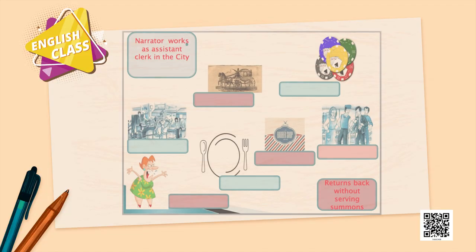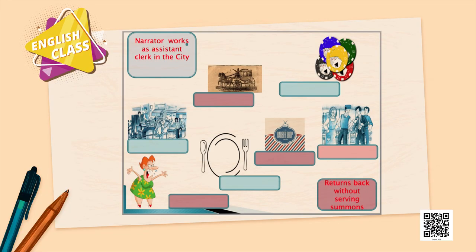So Suhani, let us start from the first box. What would be the answer? The narrator works as assistant clerk in the city. And after that, what does he see? Bill, the hack driver. Very good, Suhani. They both have a deal and Bill takes him around the city.